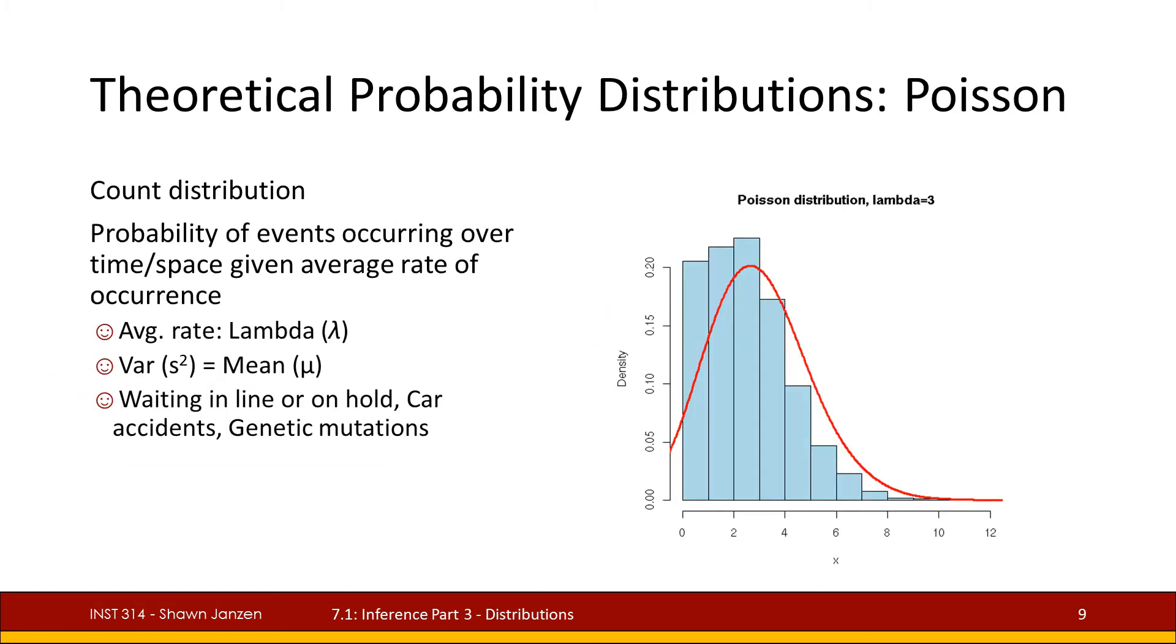The next one we're going to look at is the Poisson distribution which is characterized as like another count distribution and this one unlike the Bernoulli has a different type of measurement.